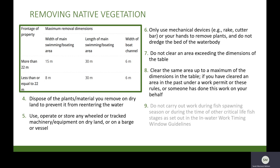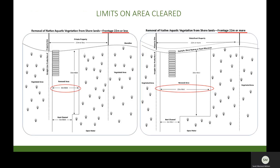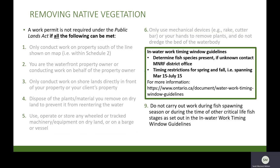There are maximum areas that may be cleared with respect to native vegetation. The dimensions are shown outlined in green in the green box. If your property frontage is more than 22 metres, the maximum width of swimming and boating area that can be cleared is 15 metres. If the property frontage is less than 22 metres, a maximum width of 8 metres can be cleared. These two diagrams provide a summary of limits to be cleared with respect to property frontage. Work cannot be carried out during the fish spawning season or during other critical fish life stages, as outlined in the In-Water Work Timing Window Guidelines. If you have any questions, please contact your MNRF District Office.